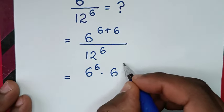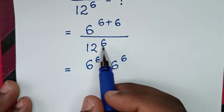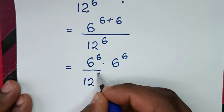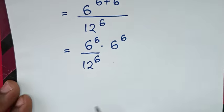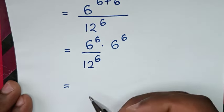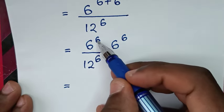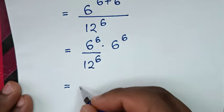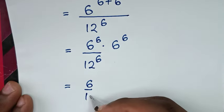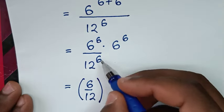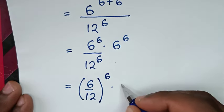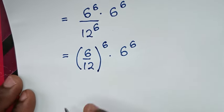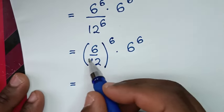So we have 6 power of 6 times 6 power of 6, and this 12 power of 6 divides one part — so we get (6 power of 6) over (12 power of 6). This is division of exponents with different bases but the same power of 6, so we write (6 over 12) to the power of 6, times 6 power of 6.